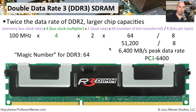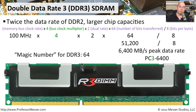So if you're given a question where you need to calculate either your peak data rate or the original memory bus clock rate for a particular set of DDR, DDR2, or DDR3 memory, just remember your magic numbers: 16 for DDR, 32 for DDR2, and 64 for DDR3. Simply multiply or divide by the appropriate magic number for the memory type you're using.